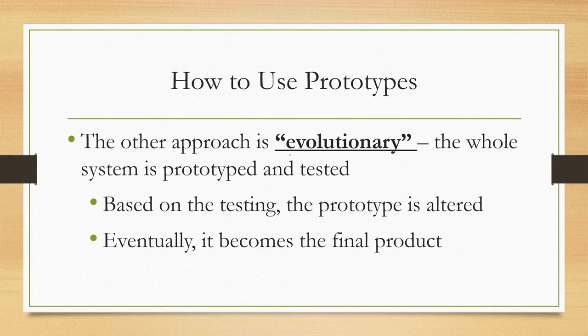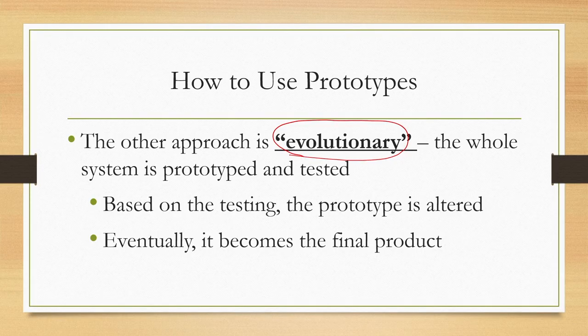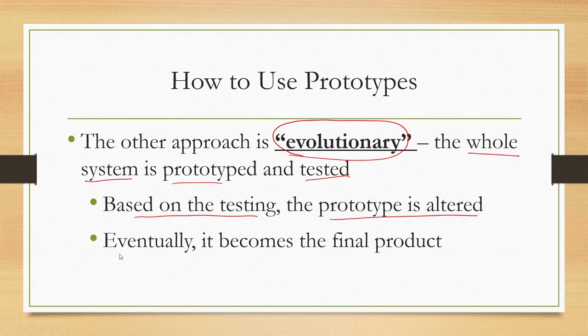The third approach is called evolutionary. Here we are also not throwing away the prototypes, but unlike the incremental approach, we are not dividing the system into modules. Instead, we create a prototype for the whole system together and then test it. Based on the testing, the prototype is altered, and this goes on in a cycle until it eventually becomes the final product. The other approaches include throw-away and incremental, and we can choose any of these.